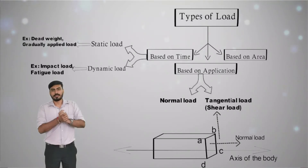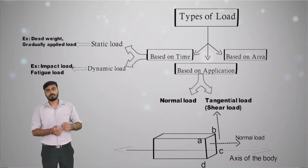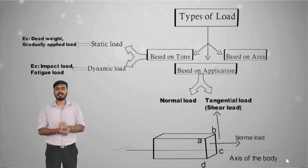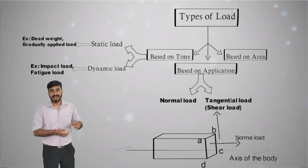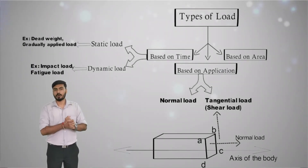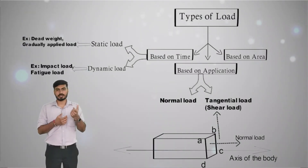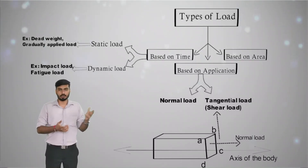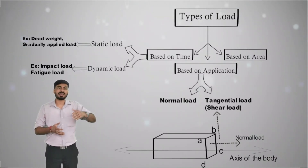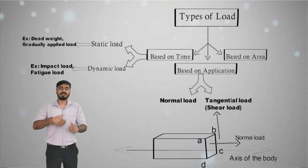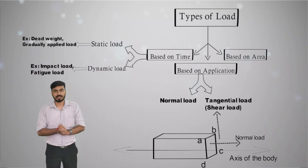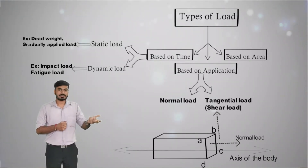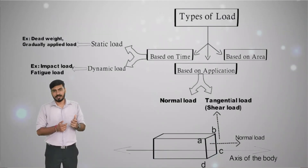Now consider load applied in the vertical direction. This direction is perpendicular to the axis of the body and parallel to the cross-section area. This type of load is called a tangential load, also known as shear load, and it creates shear stress in the body. Identifying the type of load application is very important, as it determines how you calculate your examples.